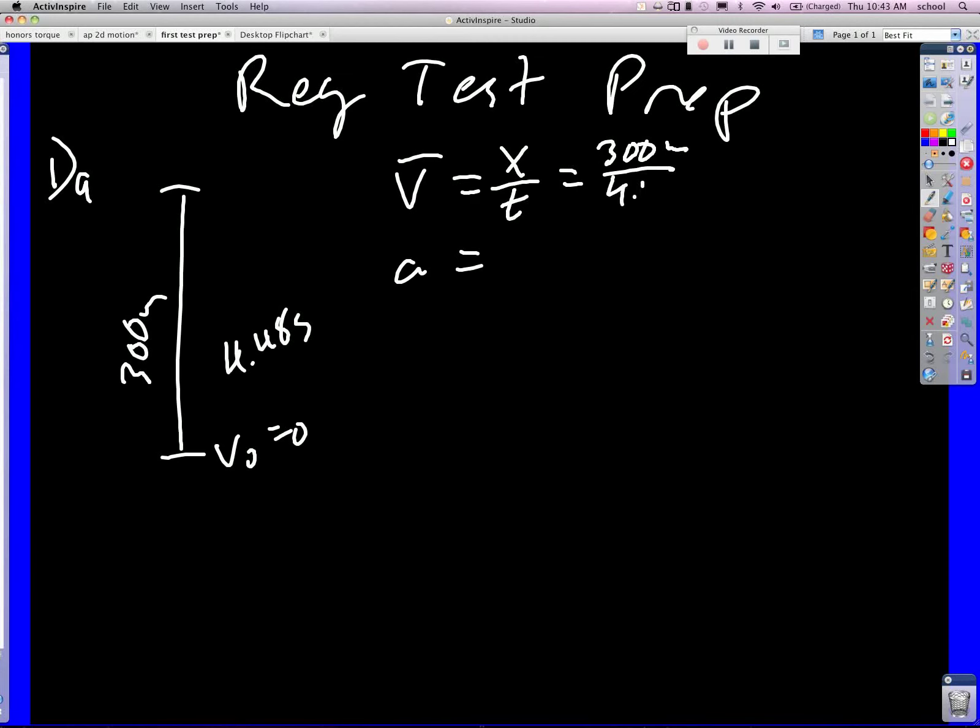So it's 300 meters divided by 4.48 seconds. That looks like it should come out to be something like 67 meters? Yeah, I was going to say around 70. So 67 meters per second.